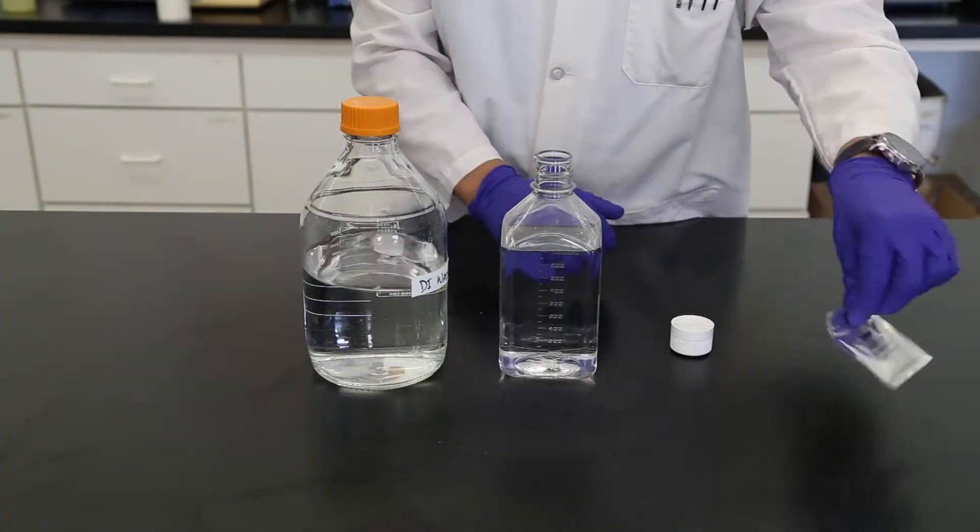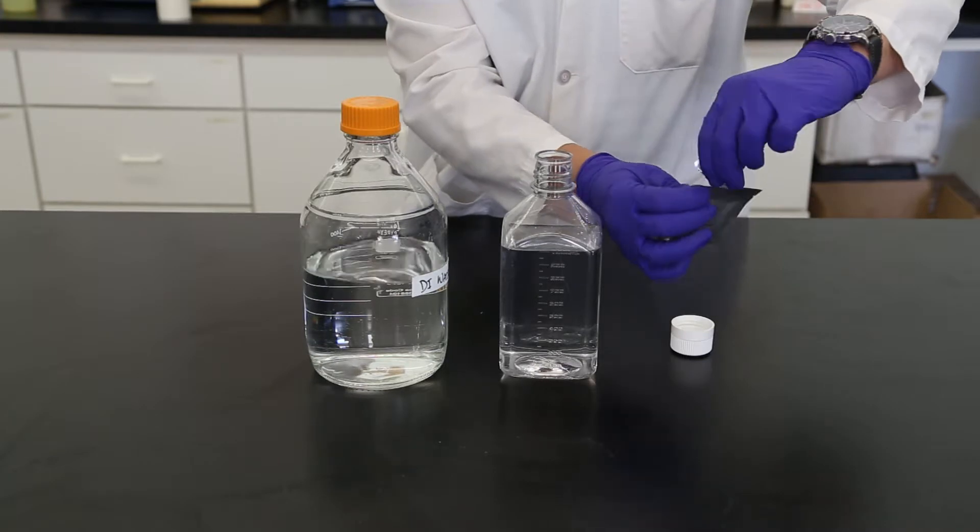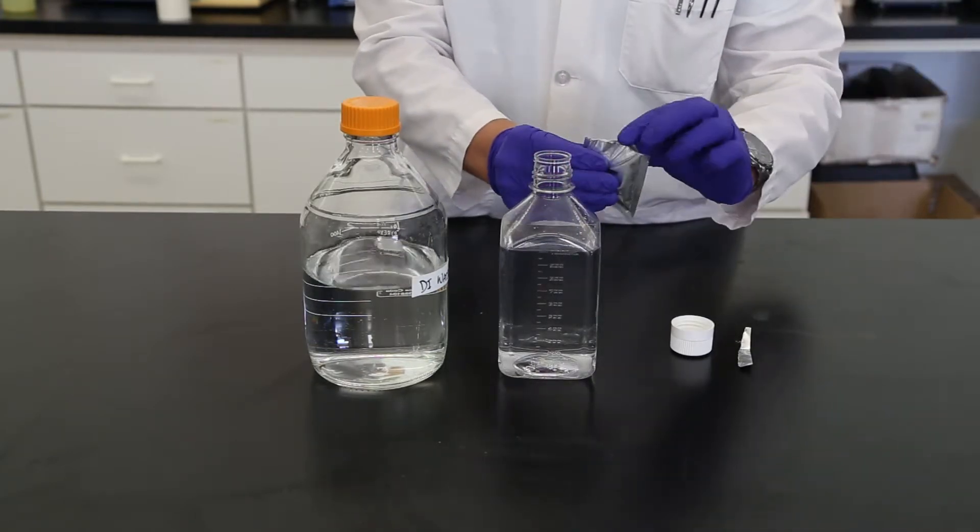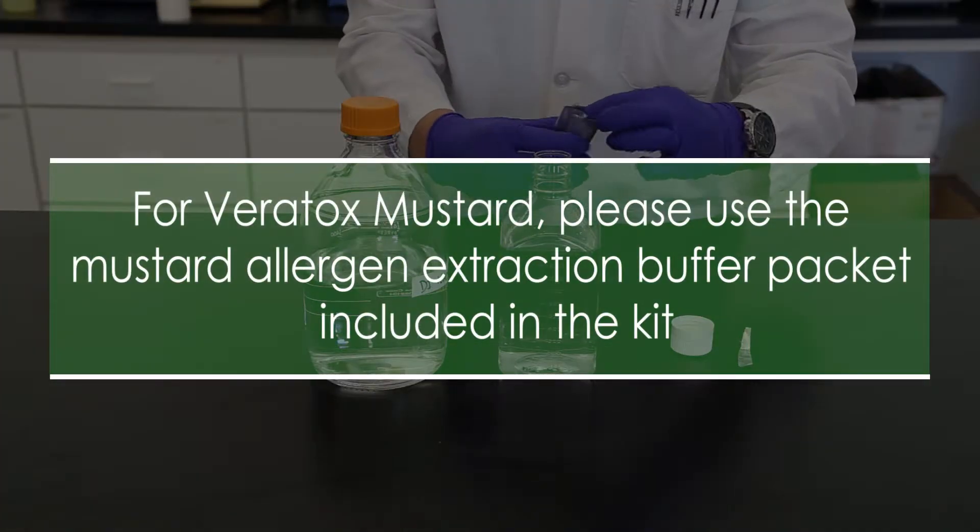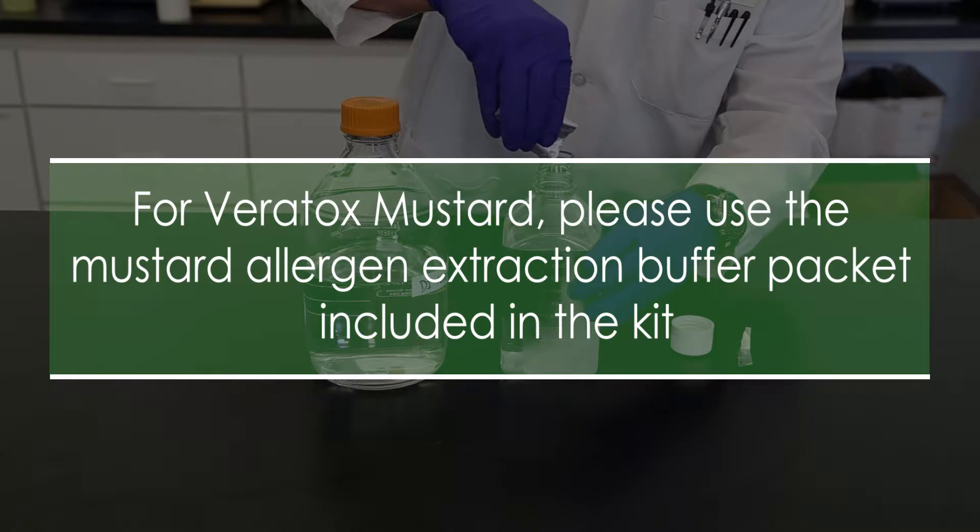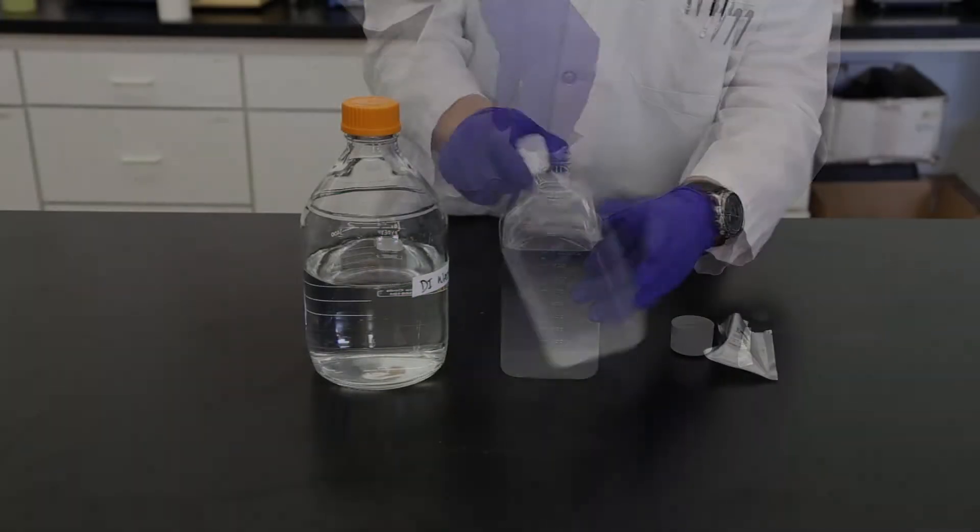Prepare extraction solution by adding contents of the PBS foil pouch to 1 liter of distilled or deionized water. Mix thoroughly.